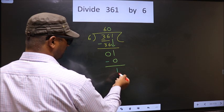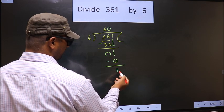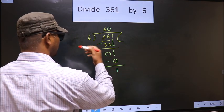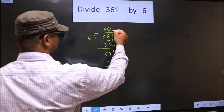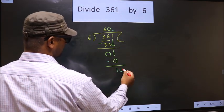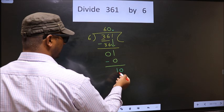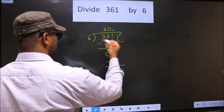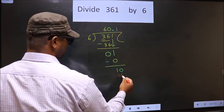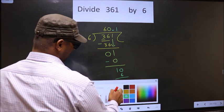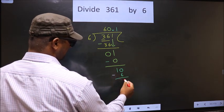Now we did not bring any number down here, and 1 is smaller than 6. So we can put a dot and take 0 here. Here we have 10. A number close to 10 in the 6 table is 6 times 1 equals 6. Now you subtract. 10 minus 6 is 4.